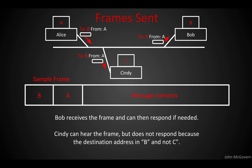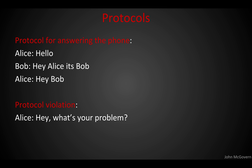Bob receives the frame and says, that's for me — the destination is B and I have the B address. Cindy receives the frame as well, because remember, this is just a shared electrical wire, a piece of electrical cable. Cindy looks at the message and says, that's to B, so I'm going to discard it. So we have the destination, the source, and the message — the basics of a protocol.